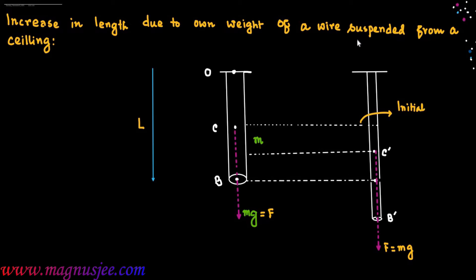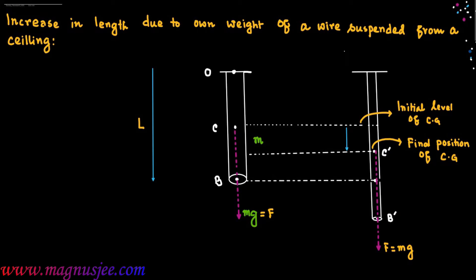C prime is the final position of the center of gravity after elongation of the wire. We denote the elongation or increase in length of the wire as Delta L. Delta L is the elongation of the wire due to its own weight. The same elongation can be measured from point B to B prime, or from C to C prime.